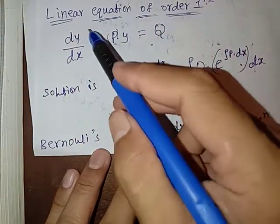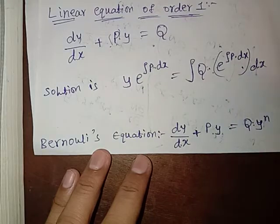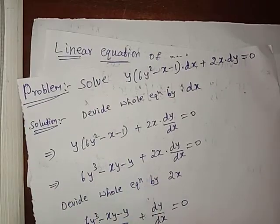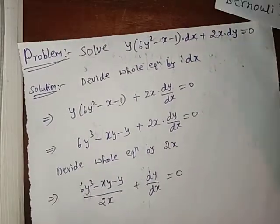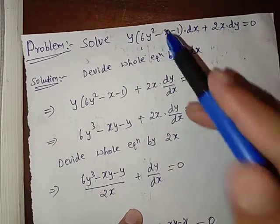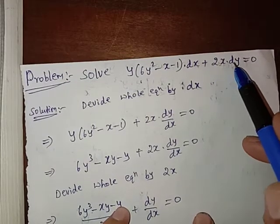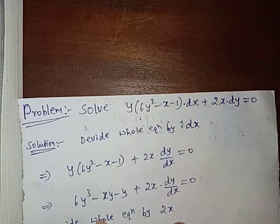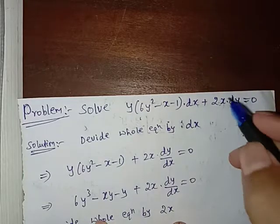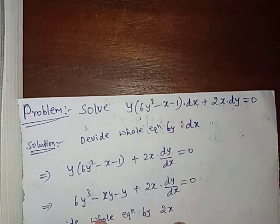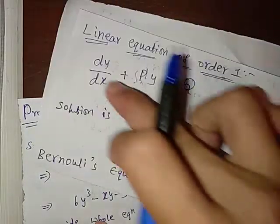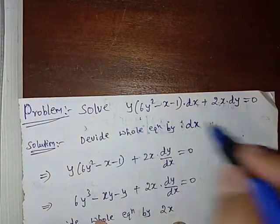We can solve a linear equation of order 1 in that way. Now, how do we solve Bernoulli's equation? Here is an example: we have to solve y(6y² − x − 1)dx + 2x dy = 0. First, we divide the whole equation by dx to get dy/dx, so we can express it in the form dy/dx + py = q.